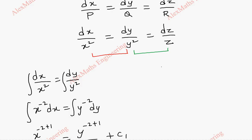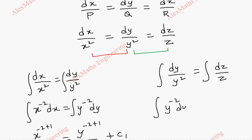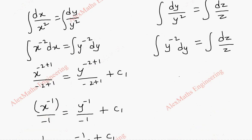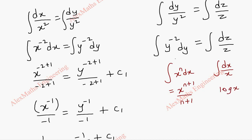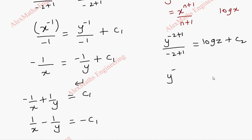Now let's take another pair — the second and third — so integral dy by y square equal to integral dz by z. Here it is y power minus 2 dy, and on the other side we have integral dz by z. We use the formula integral x power n dx equals x power n plus 1 by n plus 1, and here integral dx by x equals log x. For the first term, it is y power minus 2 plus 1 by minus 2 plus 1, and on the other side it is log z plus c2.